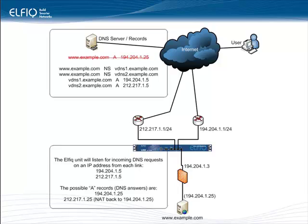We've also configured the link balancer with possible A record resolutions. For www.example.com, the link balancer may answer 194.204.1.25, as was the case when hosted in the external DNS service. But it may also answer 212.217.1.25 in case the primary link is down or if the secondary link offers better service. Note that there are NAT rules that will NAT traffic sent to 212.217.1.25 back to 194.204.1.25, because that's the only IP address that the firewall will understand and forward to the correct web server.